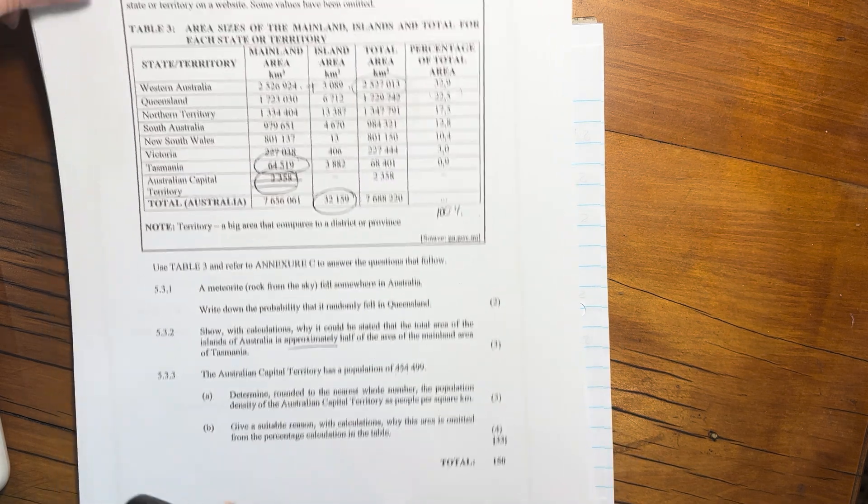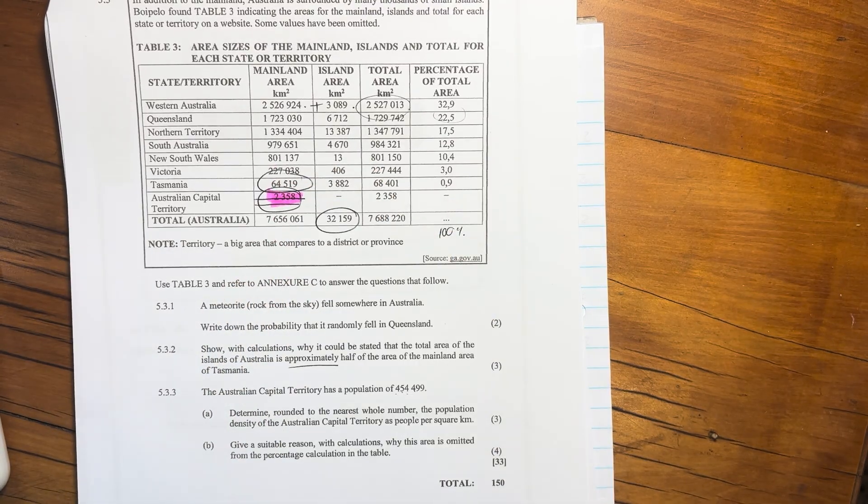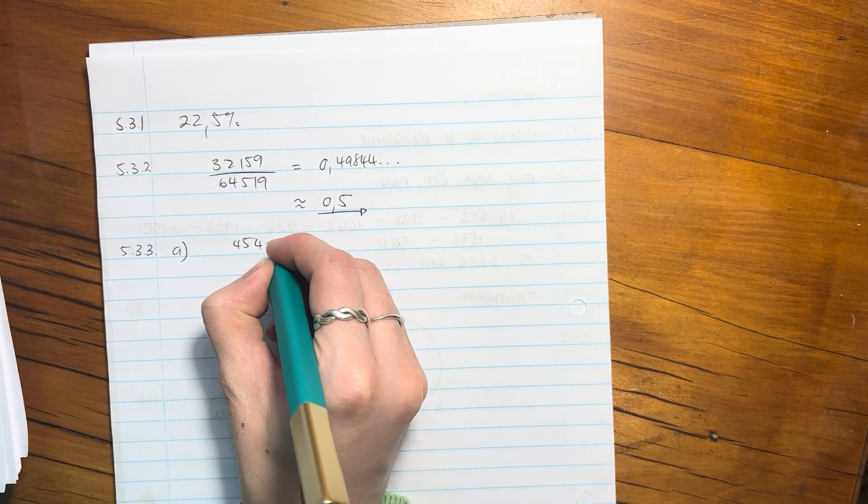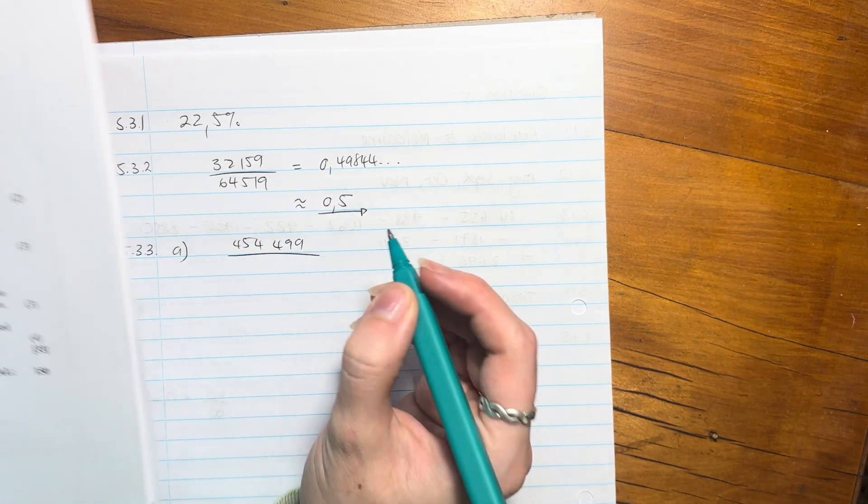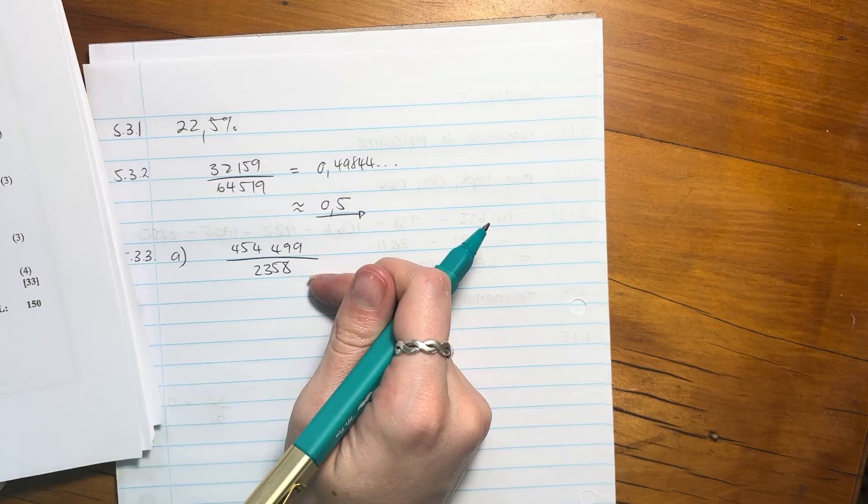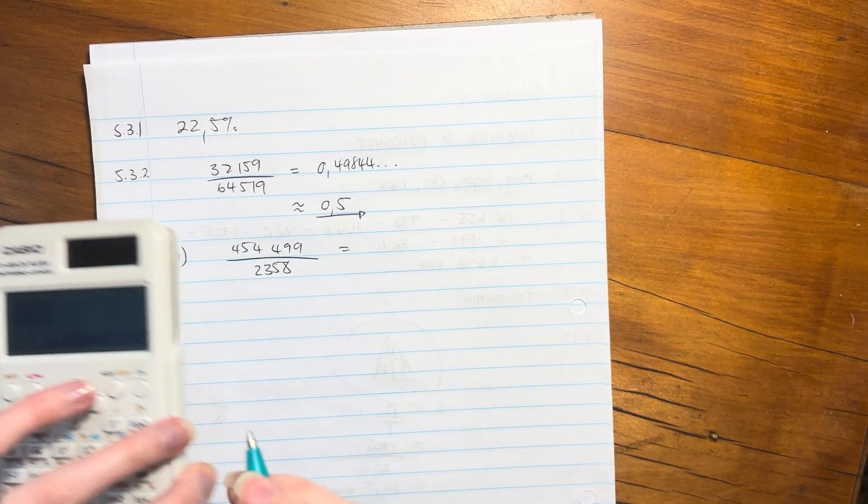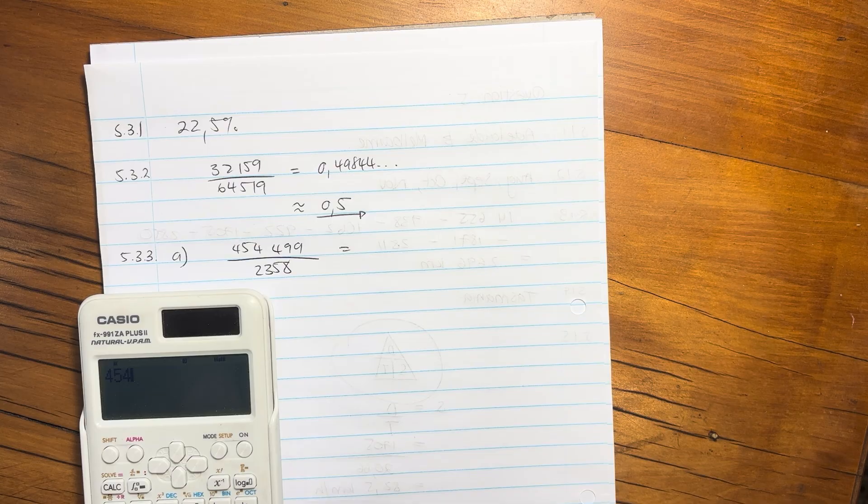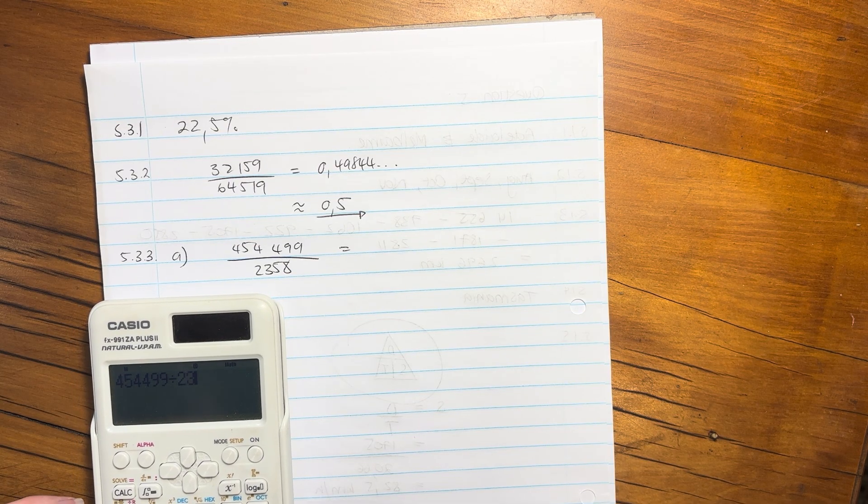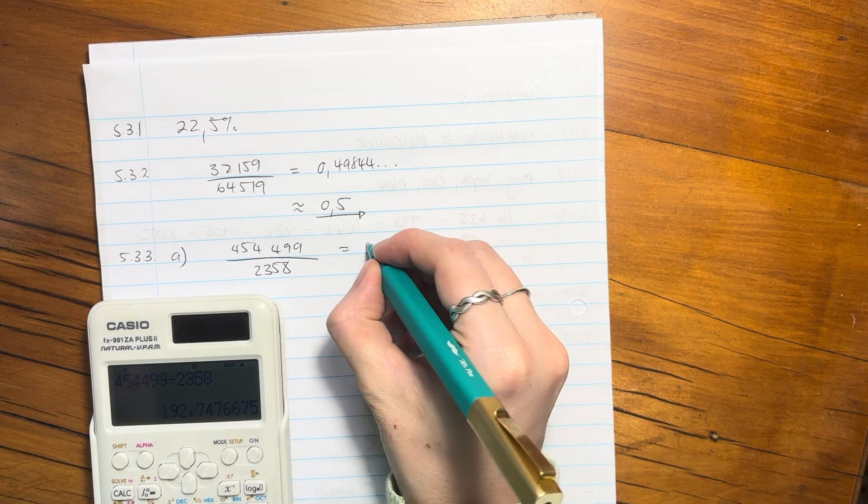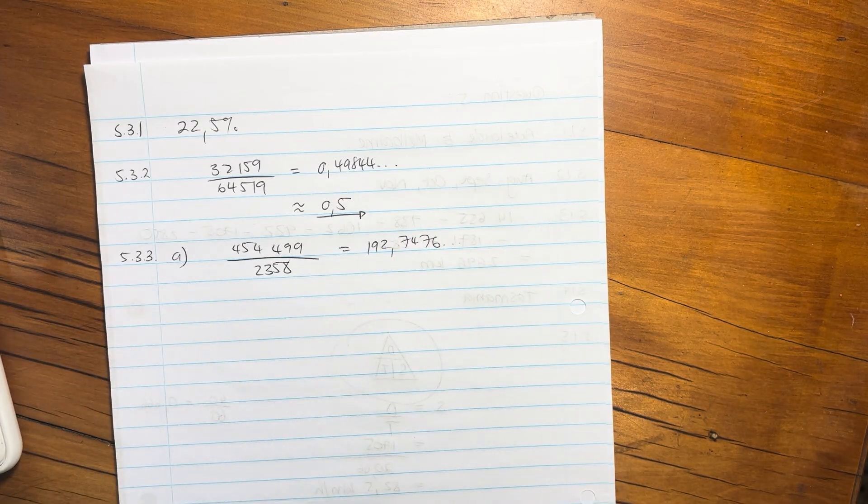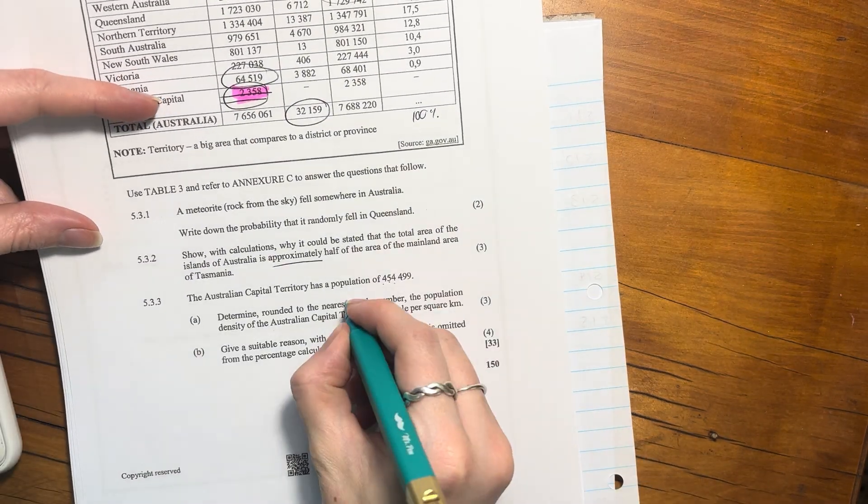Now, I crossed this out on the previous one, but we actually are going to have to use it. So this is 2,358. So we're going to say the number of people per kilometre. So we're going to put that in, the 2,358. So basically, this is people, and that's kilometres. And our answer will then be people per kilometre. 454,499 divided by 2,358. And it gives me 192,747.6...